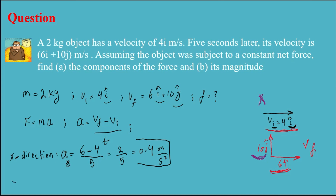I also need to find the acceleration in the y direction. My final velocity in y is 10, and my initial velocity in y is 0 — because there is no y-component in the initial velocity. So ay equals 10 minus 0 divided by 5 seconds, which gives 2 meters per second squared.